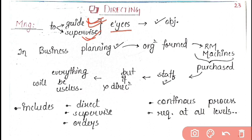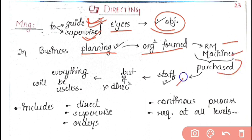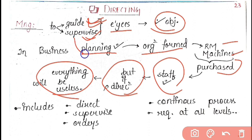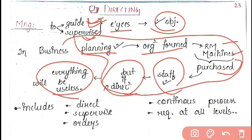These two things are done by directing. Directing is done so that the objective of the company can be achieved. In a company, planning happens and according to the plan organization is formed, then raw materials and machines are purchased and staff is appointed. But if direction is not proper, then everything will be useless. All these expenses will go in vain if there...